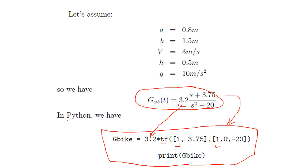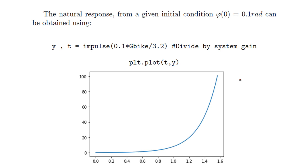For the natural response without a driver — imagine the driver is not applying any force — and there is a small initial condition of 0.1 radians, which is approximately 5 or 6 degrees. What happens is that the angle increases very quickly from 0.1, and in approximately 1.4 to 1.5 seconds it will reach 90 degrees, meaning the bicycle is falling down.